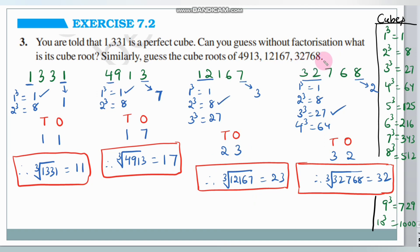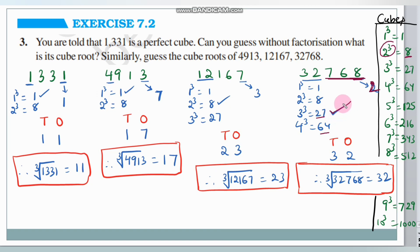Next, 32,768. The ones place digit is 8. Since 2 cube is 8, the ones place of the cube root is 2. Ignoring the last 3 digits, we have 32. Starting from 1: 1 cube is 1, 2 cube is 8, 3 cube is 27, 4 cube is 64. Since 32 lies between 27 and 64, we take the smallest cube, which is 27 — that is 3 cube. So the tens place is 3, and the cube root of 32,768 is 32.